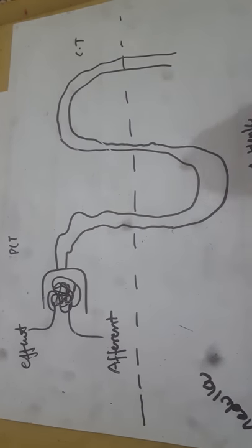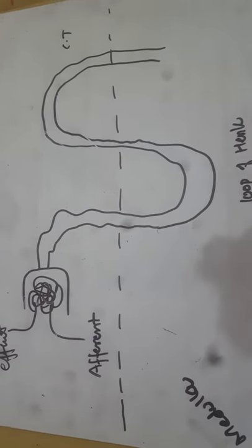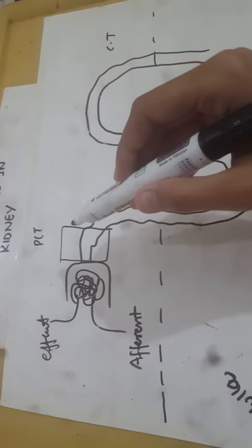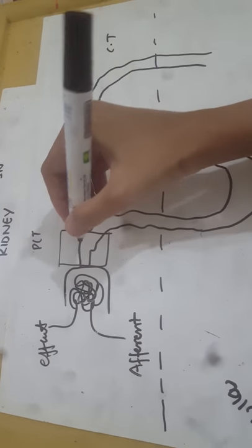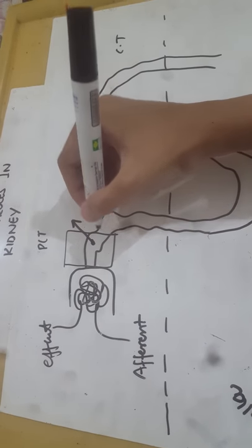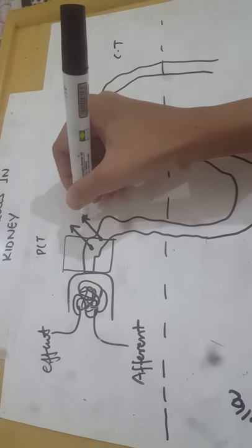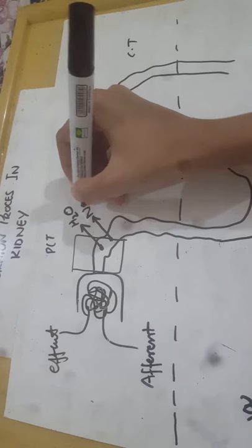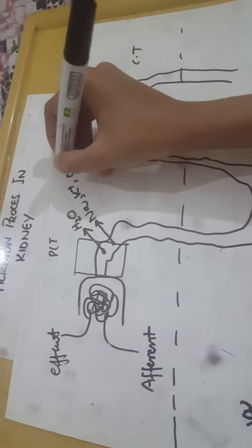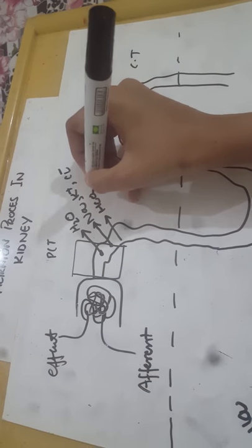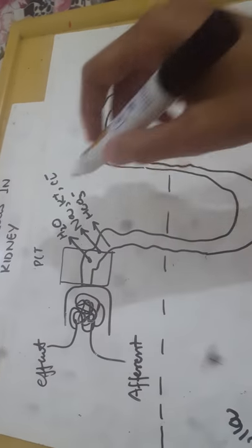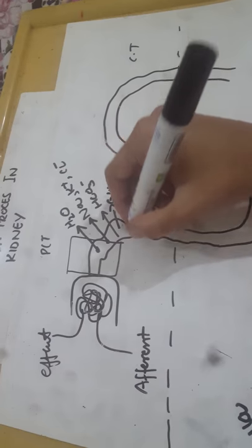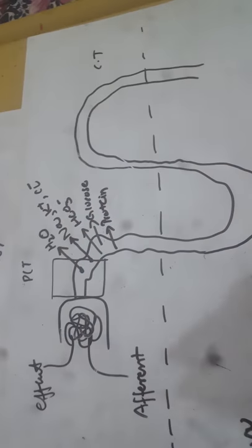Now I'll tell you the products that are absorbed from specific sites. First, we will discuss the proximal convoluted tubule. In the proximal convoluted tubule, reabsorption occurs from the kidney back into circulation. There is reabsorption of water, sodium, potassium, chloride, and bicarbonate. There is also reabsorption of glucose and proteins — essentially everything is reabsorbed from the proximal convoluted tubule.